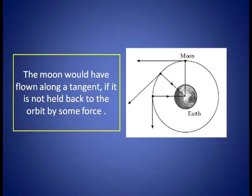It is said that Newton was sitting under a tree when an apple fell on the ground. This set him thinking — since all apples and other objects fall to the ground, there must be some force from the earth acting on them. He asked himself: would it be the same force which keeps the moon in its orbit around the earth? Newton argued that at every point in its orbit, the moon would have flown along a tangent but is held back to the orbit by some force. Could this continuous fall be due to the same force which forces an apple to fall to the ground?